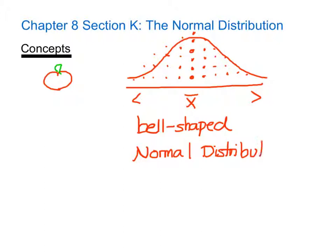We see normal distributions both in nature and in man-made systems all the time. It's really common to see normal distributions when measuring the height of 16-year-old boys, the length of adult sharks, or the scores of tests from a significantly large enough population. We should get these nice bell-shaped curves, and if we don't, we see that the data is skewed.